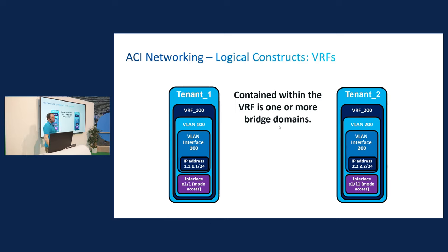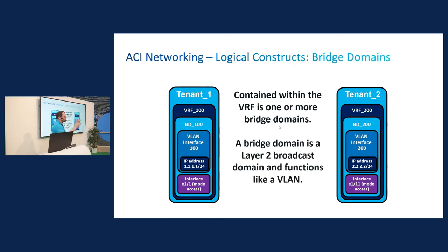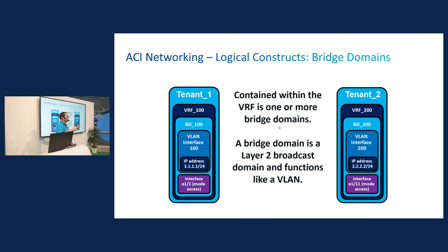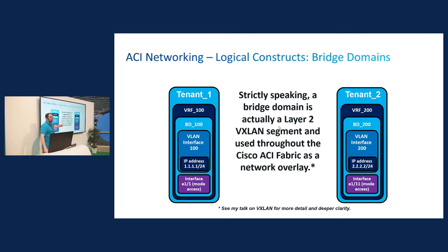Within the VRF, you have one or more bridge domains. What's our layer two broadcast domain in traditional networking? A VLAN. We've been doing VLANs since it seems like forever. A bridge domain is a layer two broadcast domain and it functions a lot like a VLAN — but they're not identical even though they do most of the same thing. If you're going to get technical, it's a VXLAN segment. One piece of advice about learning ACI: learn VXLAN first, and all the weird stuff about ACI makes a lot more sense.